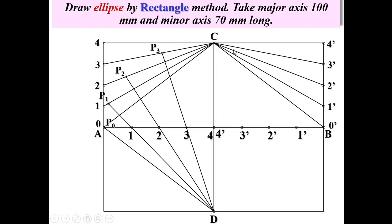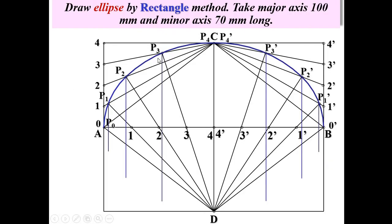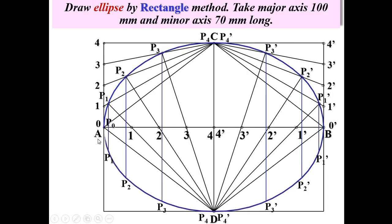Do the same steps on the right-hand side of the minor axis to get corresponding points P4', P3', P2', P1', and 0. Join all the points with a smooth curve to get the upper half of the ellipse. For the lower half, draw vertical lines through all points P1, P2, P3 and their dashes, and use a compass to mark equal distances below the major axis to get the corresponding lower points. Join all points with a smooth curve to complete the ellipse by the rectangle method.